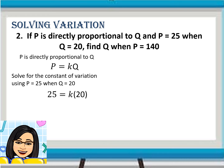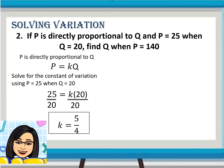By substitution, P which is 25 is equal to K times Q which is 20. Dividing both sides by 20, the constant of variation K is 5 fourths.